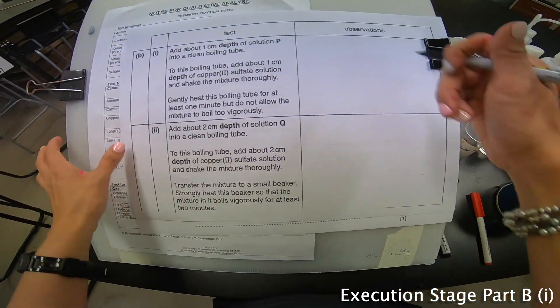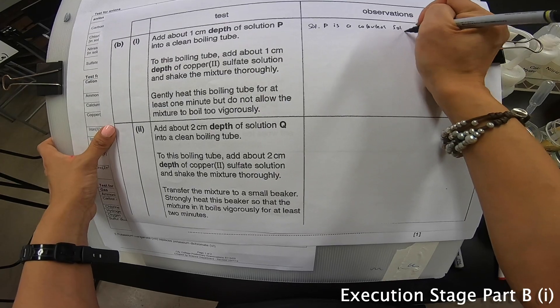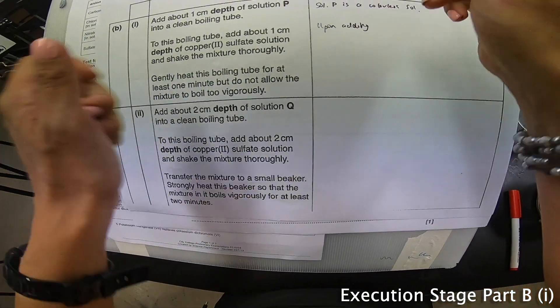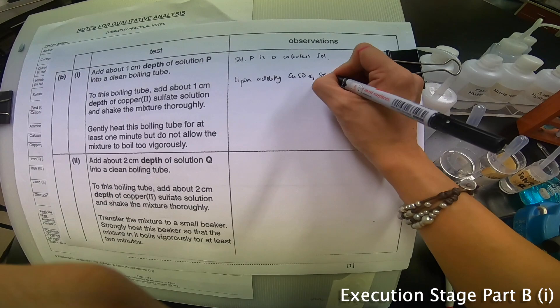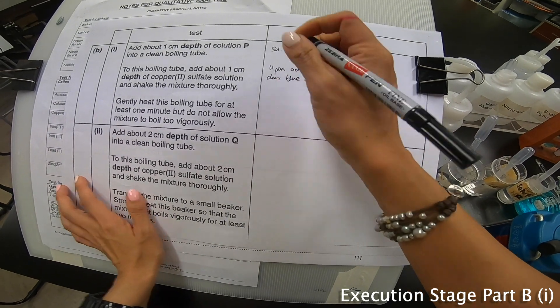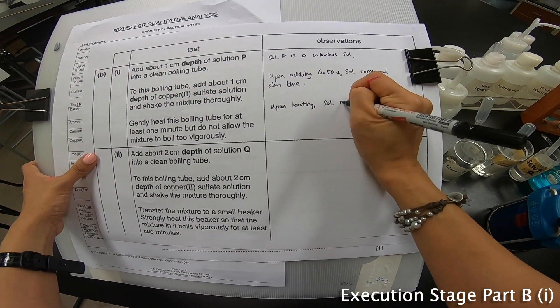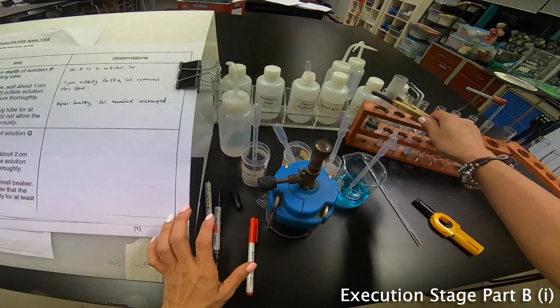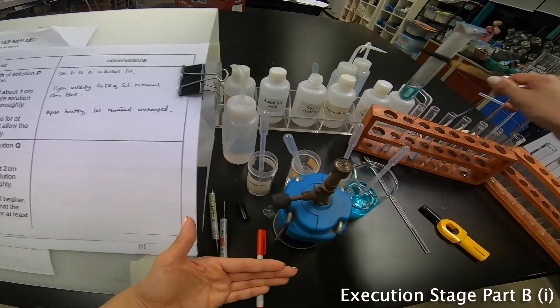So right now I'm going to write down solution P is a colorless solution. Let me use another marker. Upon adding CuSO4, solution remain clear blue. Upon heating, solution remain unchanged. Even though just now I saw a little bit grayish, but I'll let it set. I'll just let it cool down. Let's see later on where anything changes. Let's move on to the next one.